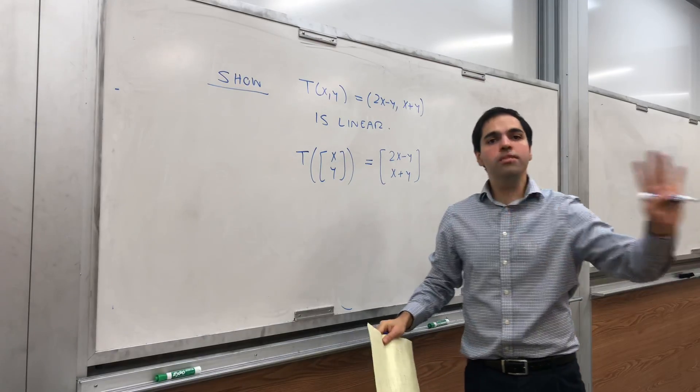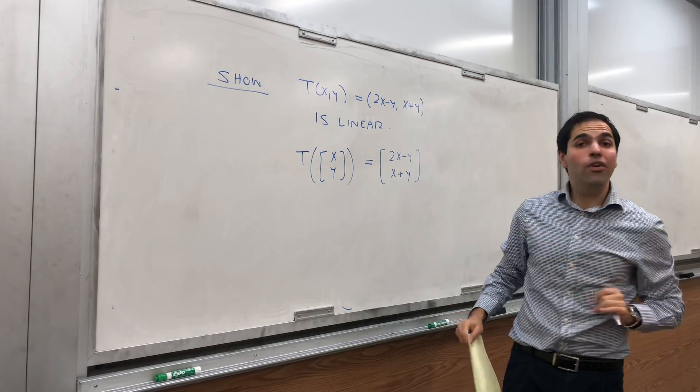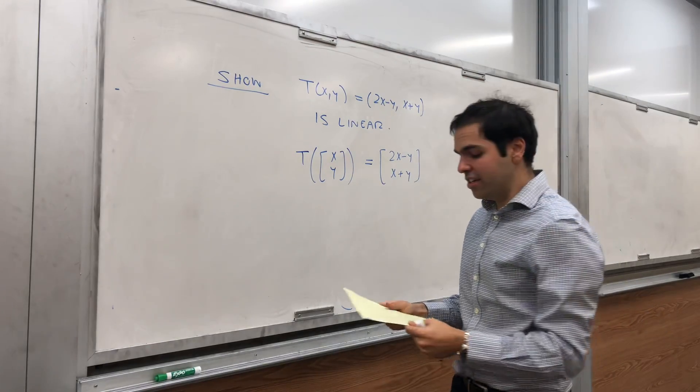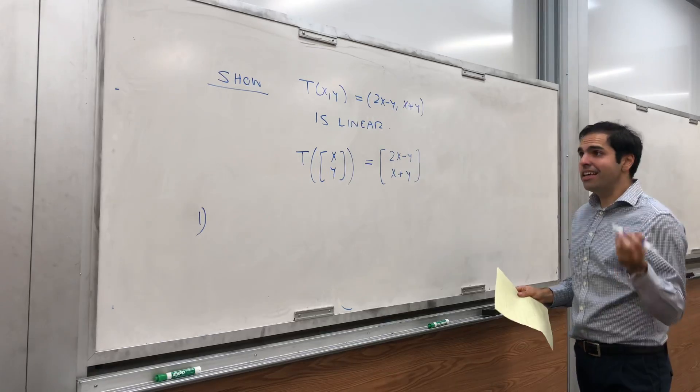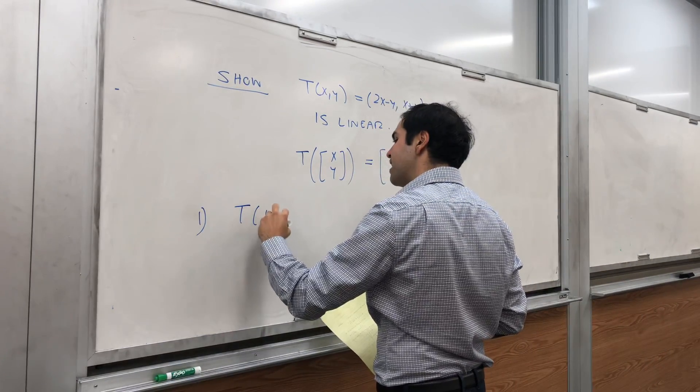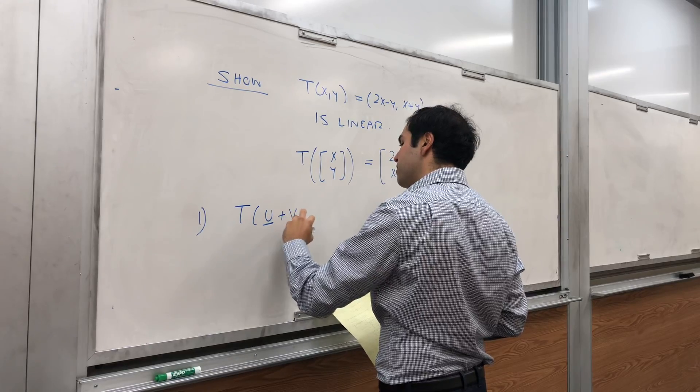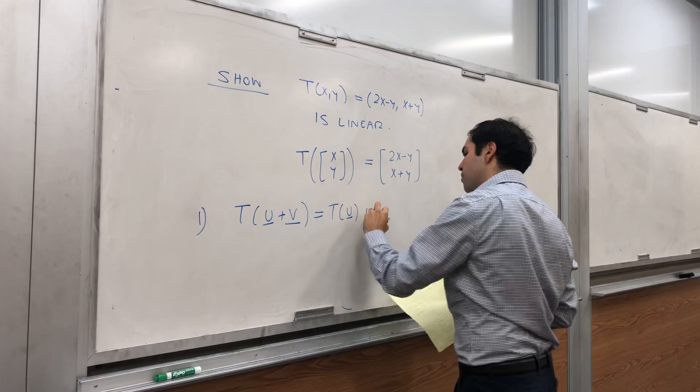All right, without using matrices, let me show you from the definition why this is a linear transformation. What does linear mean? It means two things. First of all, it means that T(u + v) = T(u) + T(v).